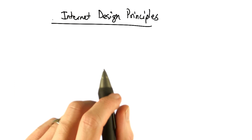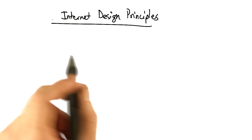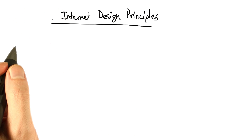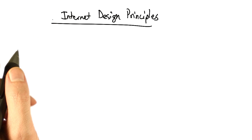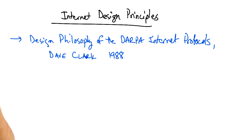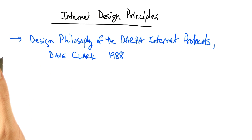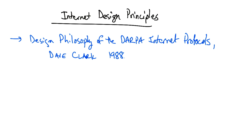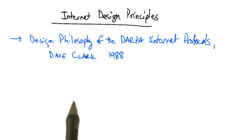In this lecture, we will talk about the Internet's original design principles. These design principles were discussed in the paper reading for today, 'The Design Philosophy of the DARPA Internet Protocols,' by Dave Clark, dated 1988. The paper has many important lessons, and we will go through many of them as we revisit many of the design decisions.